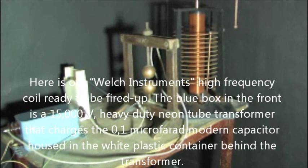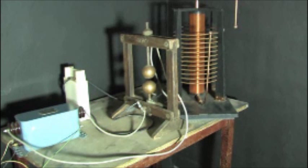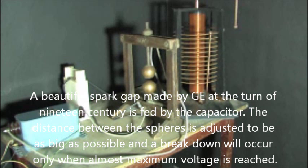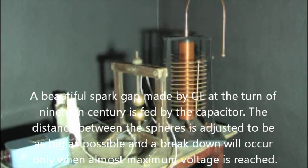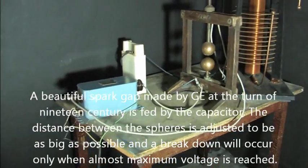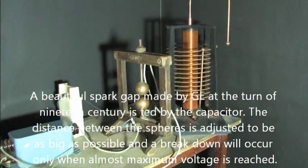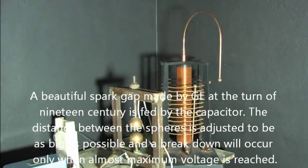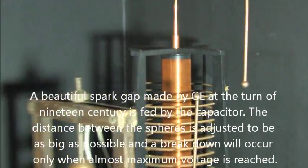The beautiful spark gap made by GE at the turn of 19th century is fed by the capacitor. The distance between the spheres is adjusted to be as big as possible and a breakdown will occur only when almost maximum voltage is reached in the capacitor.